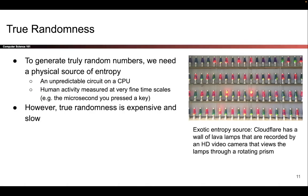Now that we know how to define and measure randomness, let's think about where randomness actually comes from. If you want true randomness, you have to rely on some physical source of entropy — something that exists in the real world. One example might be a circuit on your CPU that's intentionally wired to have unpredictable behavior, where the voltage level hovers around 0.5 so that sometimes it's read as a 1 and sometimes as a 0, and it's unpredictable at any given time. Another physical source might be human activity measured at very specific timescales — for example, every time you press a key on your keyboard, you record the microsecond you pressed it. Humans don't work at microsecond timescales, so those digits are essentially random.